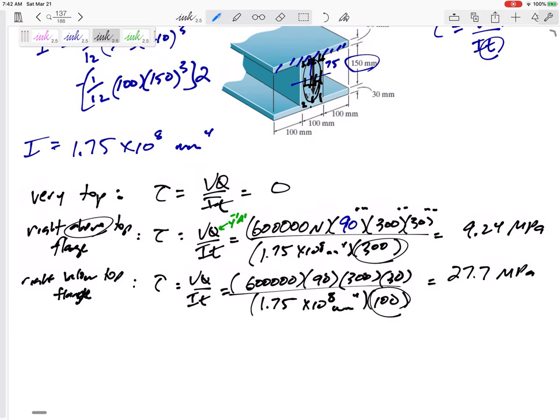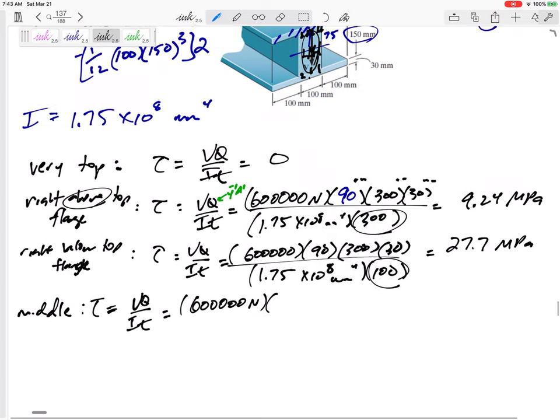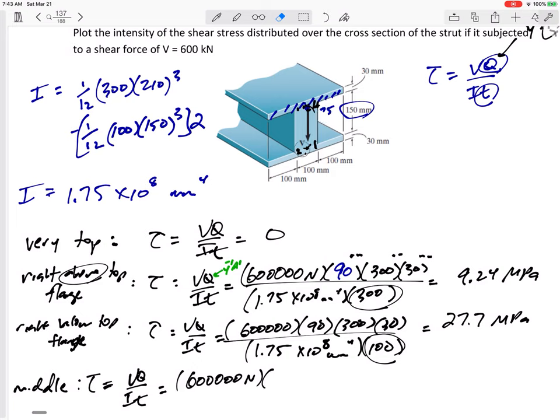Alright, then let's look at the middle. Alright, the middle, let me see if I have room for this, would be V 600 thousand newtons. Q, alright, so this one if we're looking at the middle I think it makes most sense to do the Q we talked about this